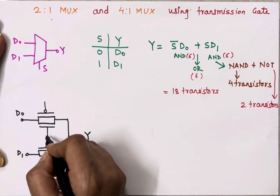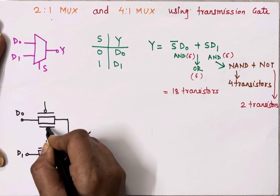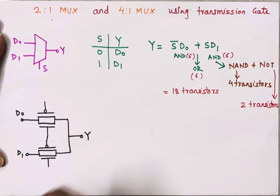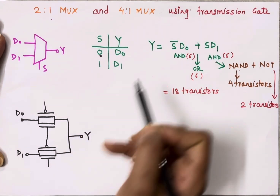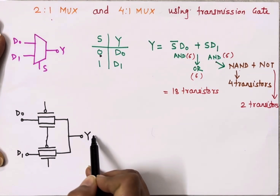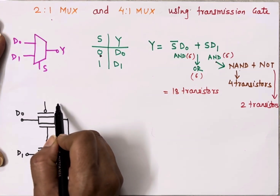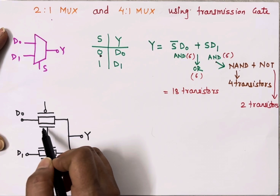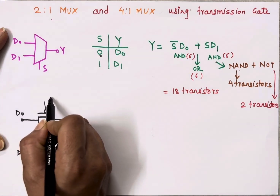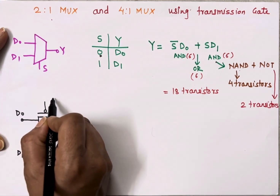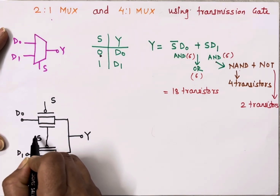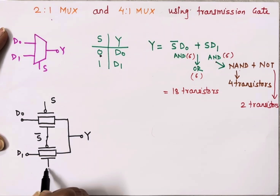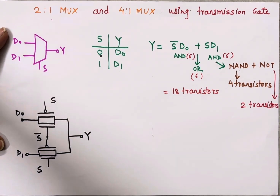I will connect the NMOS of the upper transmission gate and the PMOS of the lower transmission gate together. When S equals 0, I should get output D0, so the upper transmission gate T1 must turn on. I will connect S to the PMOS of T1 and S̄ to the NMOS of T1. For the lower gate T2, I will connect S to its NMOS and S̄ to its PMOS. Now let's verify how this circuit works.